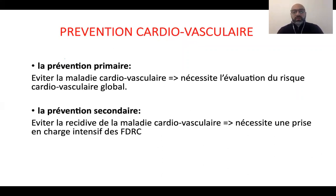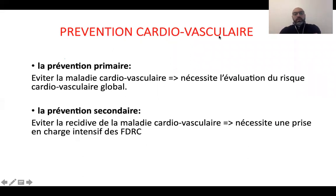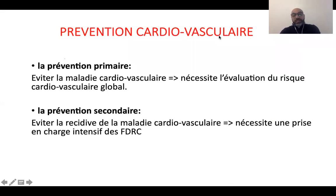Qu'est-ce qu'on veut dire par prévention cardiovasculaire ? Il y a deux types de prévention : la prévention primaire et la prévention secondaire. La prévention primaire, c'est éviter l'avènement d'une maladie cardiovasculaire, ce qui nécessite une évaluation du risque cardiovasculaire global.